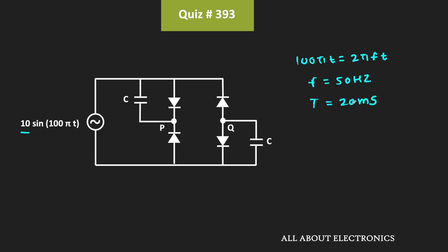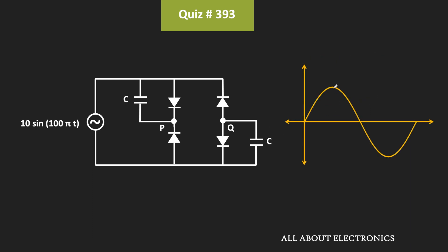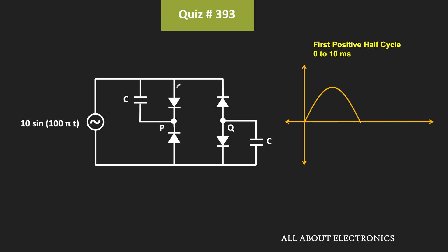Let us see how the diodes behave during the positive and negative half cycles. The peak amplitude is 10V and during the negative half cycle it is minus 10V. During the positive half cycle, the upper diode will try to conduct because the anode is more positive than the cathode. If this diode is conducting, current should flow in that direction and the same current will also try to flow through the bottom diode. But if this bottom diode is conducting, current should flow in the forward direction — meaning the bottom diode is off, and therefore the upper diode will also remain off.